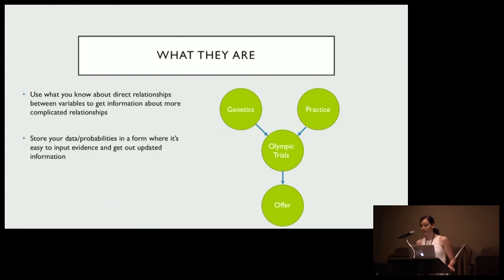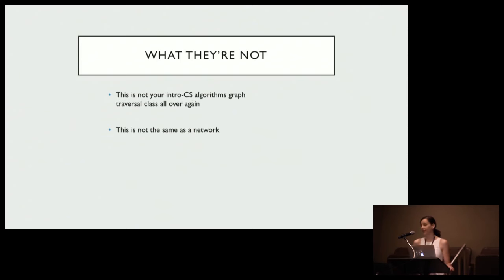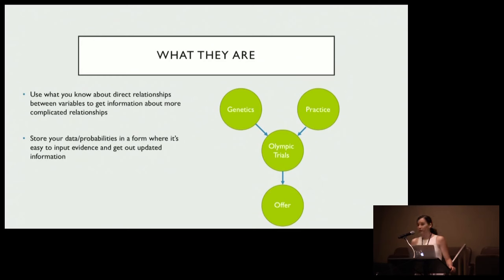What they're not — equally important — this is not your intro CS algorithms graph traversal class all over again. Those ideas are certainly useful, but the most important word here is 'probabilistic.' We have nodes that are probabilistically connected, not deterministically connected. It's also not the same as a social network where pairs of friends are connected. We're looking at causal analysis and probabilistic ways of describing relationships. And think Markov — your status is explained by your immediate neighbors. If I know the Olympic trials outcome, that's all I need to assess your probability of getting an offer.